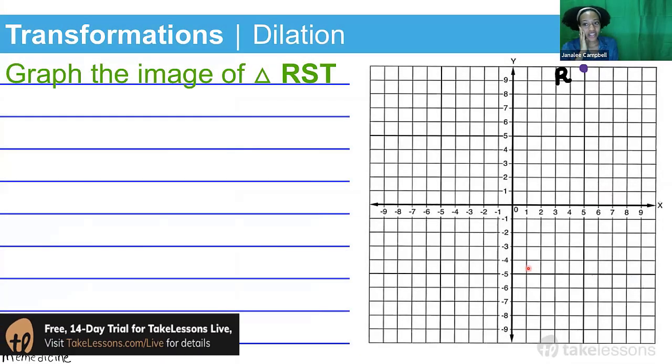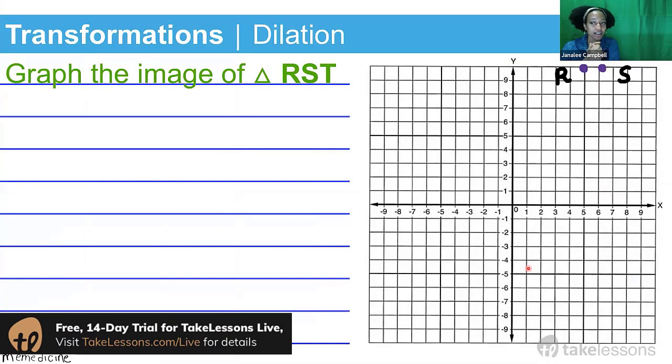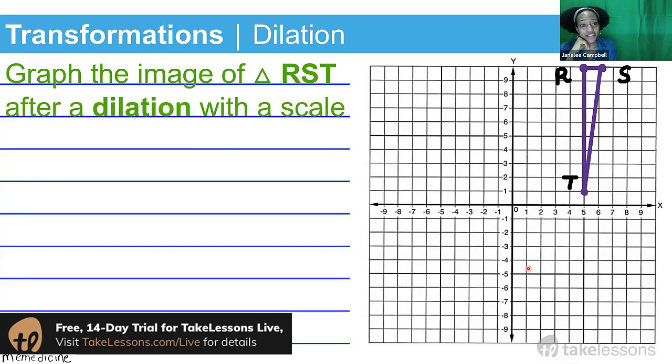All right, so I know that probably tripped us up a little bit, but here is our last transformation. We're going to graph the image of triangle RST after a dilation with a scale factor of one half. Scale factoring might sound really complicated, but it's so simple, I promise.